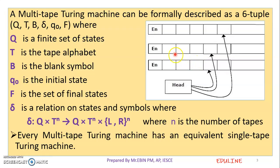We will describe a multi-tape Turing Machine using a formal definition. We define a Turing Machine as a tuple: Q, T, capital B, delta, Q0, and capital F. Here, Q is a finite set of states, T is the tape alphabet, B is the blank symbol, Q0 is the initial state, and capital F is the set of final states — the accepting or rejecting states.